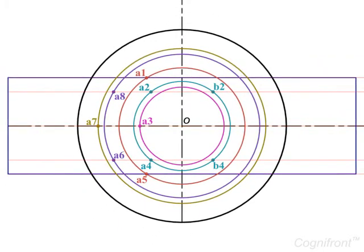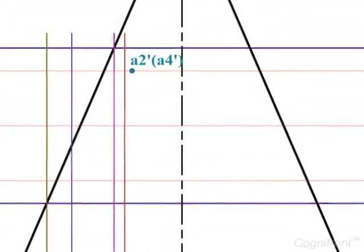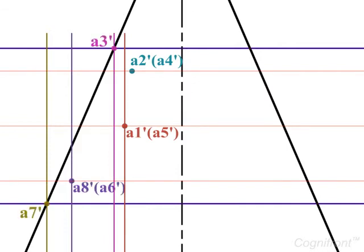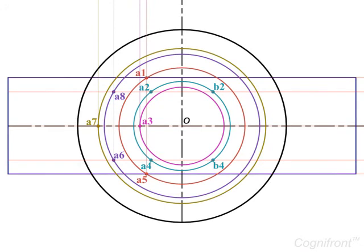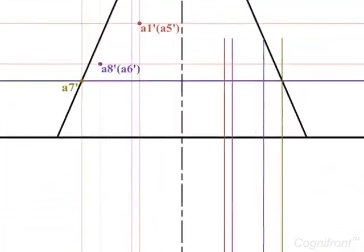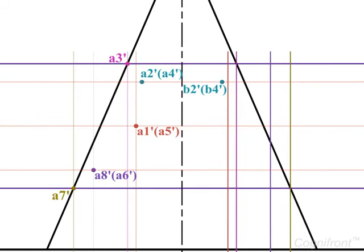Project these points onto the front view to obtain the points a1-dash, a3-dash, a8-dash, and a7-dash. Then repeat the above steps to obtain the points b1, b3, b5, b6, b7, and b8 in the top view. By projecting these points onto the front view we get points b1-dash, b3-dash, b8-dash, and b7-dash.